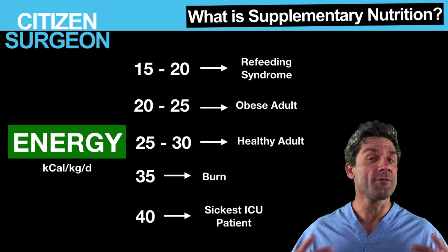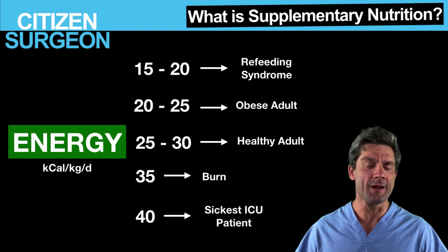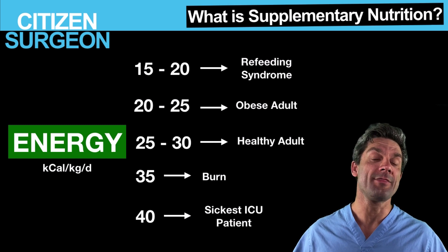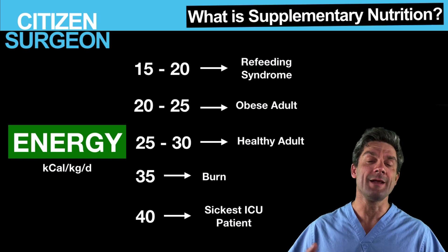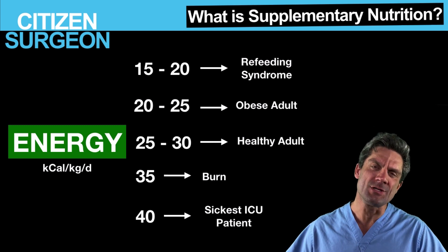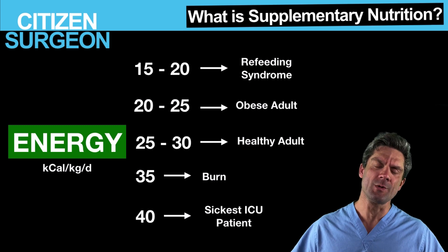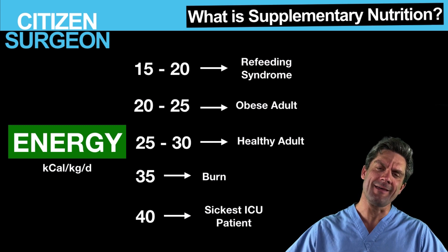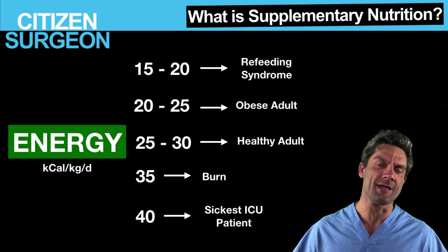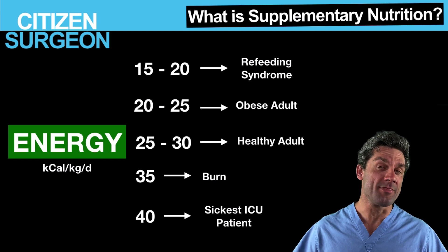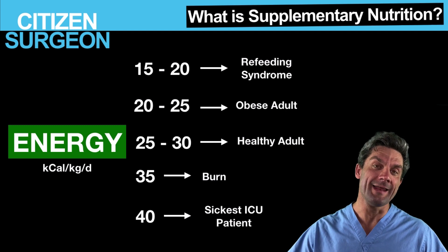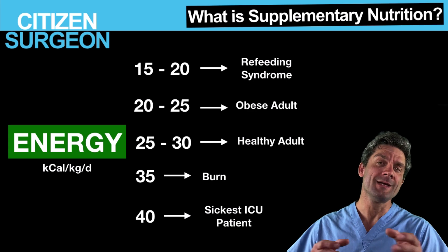25 to 30 kilocalories per kilogram per day is your healthy adult. If you think about a 2,000 calorie diet — take a 70 kilo male and multiply by 30, and you get 2,100 kcals, which lines up with our recommended daily intake. Getting over 30, so 35 to 40, these are going to be critically ill patients. Burn patients are some of the most metabolically active and high energy expenditure patients in the hospital — approximately 35, but potentially as high as 50 kilocalories per kilogram per day.